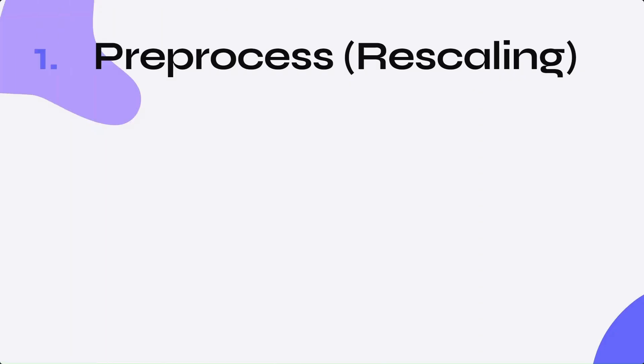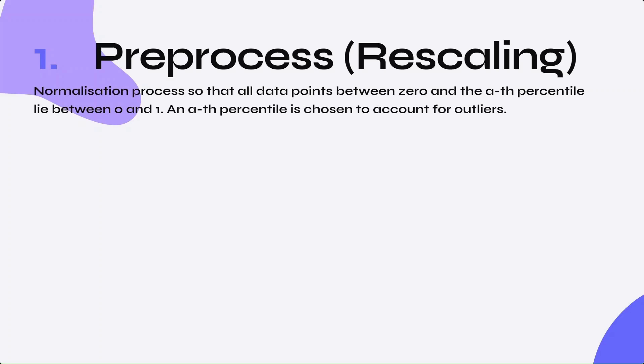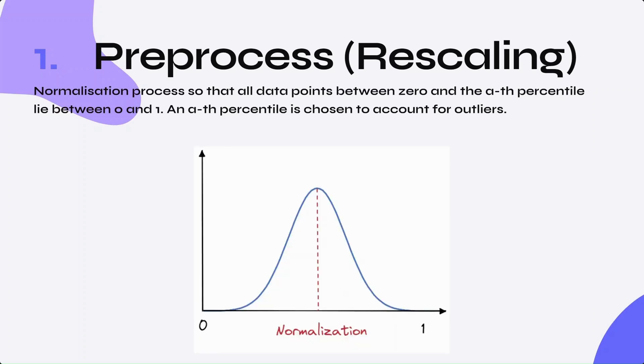The first step is to preprocess or rescale the data. Normalization in time series analysis refers to the process of scaling the values of a time series to a standard range. The goal is to bring all values to a similar scale. In the paper, a normalization process is used to scale data points between zero and an alpha percentile lying between zero and one. This percentile is chosen to account for outliers. Now the data is ready to be used.